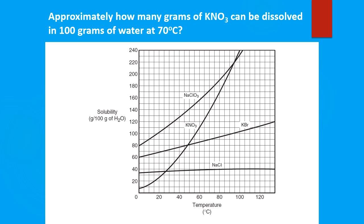Now we're given potassium nitrate and we want to know how many grams of it we can dissolve in 100 grams of water at 70 degrees Celsius. Again, we're not concerned with 100 grams of water because that is our constant. What we're concerned about is 70 degrees Celsius. So we find 70 degrees Celsius on our x-axis, go up until we meet the potassium nitrate curve, then go left to our y-axis, which gives us solubility. We get approximately 137 grams of potassium nitrate — so approximately 137 grams will dissolve in 100 grams of water at 70 degrees Celsius.